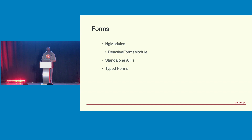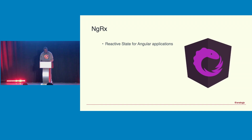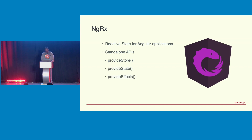All of these changes help slim down what you have to take in when building Angular apps, and this extends to the ecosystem too. NgRx — a set of libraries for building reactive Angular applications — has also evolved with the framework, introducing standalone APIs including provideStore, provideState, provideEffects, and provideRouterStore.